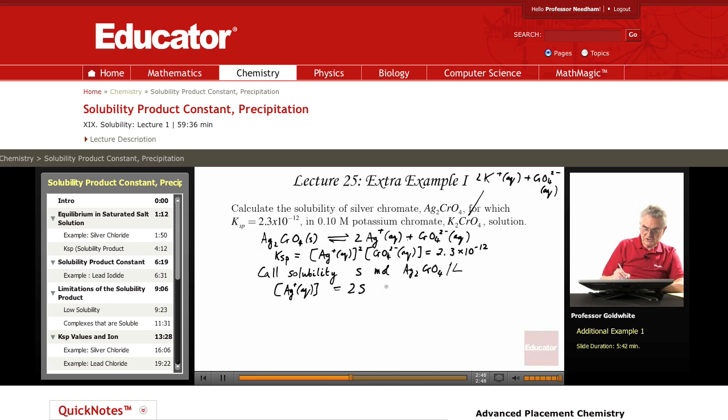And the concentration of chromate ion equals 0.10 from potassium chromate plus S from silver chromate.